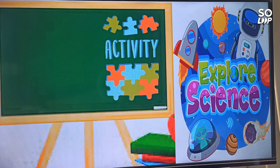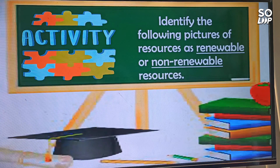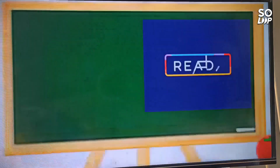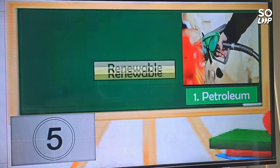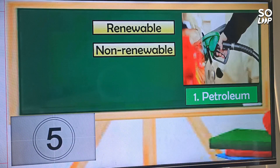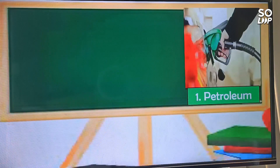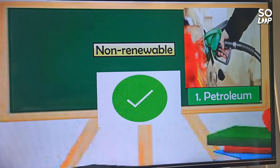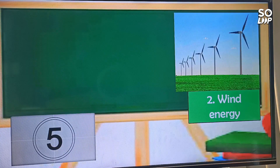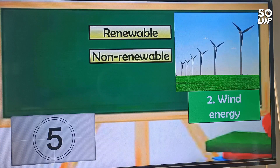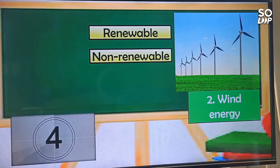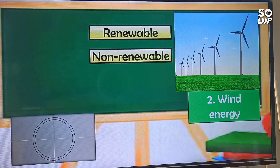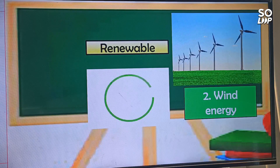Now, to find out your understanding about the lesson, let us have an activity. You are going to decide whether the resource is renewable or non-renewable. For number one, we have petroleum — is it renewable or non-renewable? Petroleum is a non-renewable resource. Correct! Next, number two, we have wind energy — is it renewable or non-renewable? That is correct — wind energy is a renewable resource.